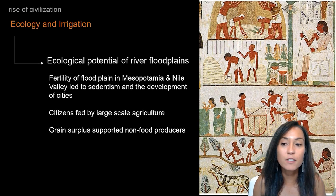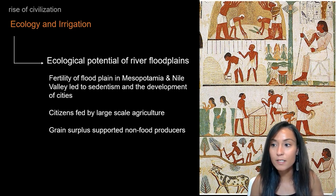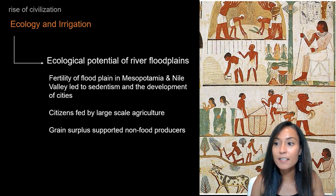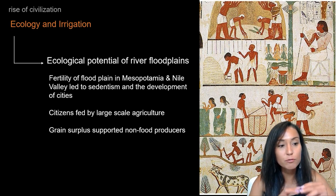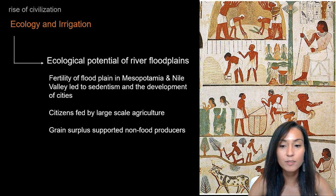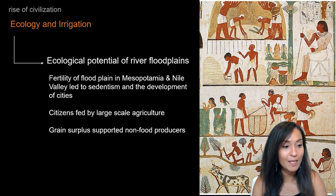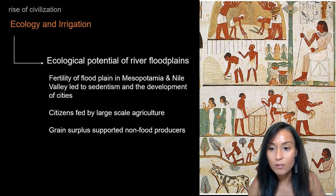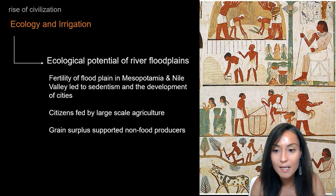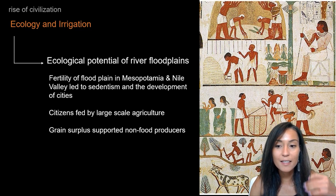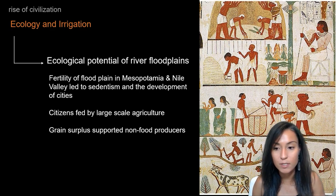The first set of theories are ecological in nature. The basic idea is that the ecological potential of river floodplains was critical to the development of state-level societies — think about places like ancient Egypt, Nubia, and ancient China. The argument is that there was exceptional fertility in the Mesopotamian floodplain and Nile Valley in particular, and that this was the primary cause for the appearance of urban centers and states within these particular regions.